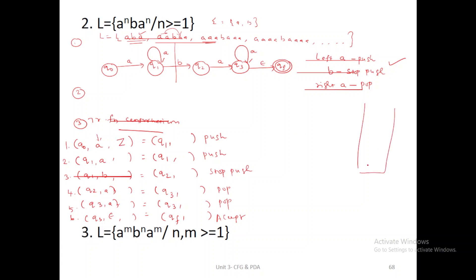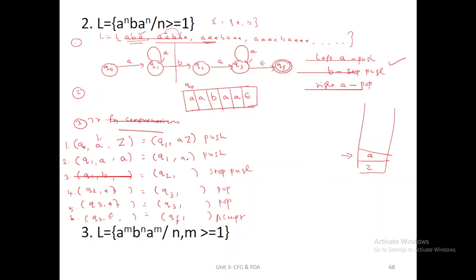I draw Z first and I am taking the number as AABAA. An empty symbol epsilon occurs at the right side of A. The initial state is Q0. Q0 reads A, and the stack contains Z. For a push operation, you just combine the second and third parameter values — that means A and Z. So now A is pushed. If Q1A means when Q1 comes to read A, A is already written on the stack as the top value.